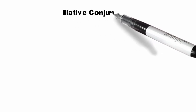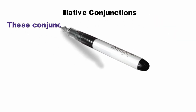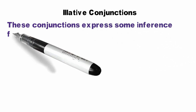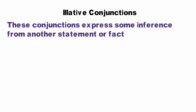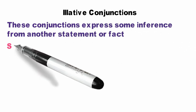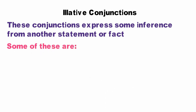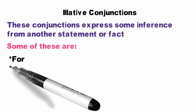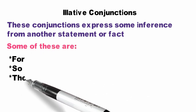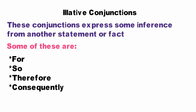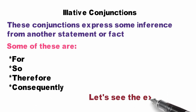Next is elative conjunctions. These conjunctions express some inference from another statement — we have to understand from one statement based on another. Some elatives are: for, so, therefore, consequently, etc. Let's see some examples.